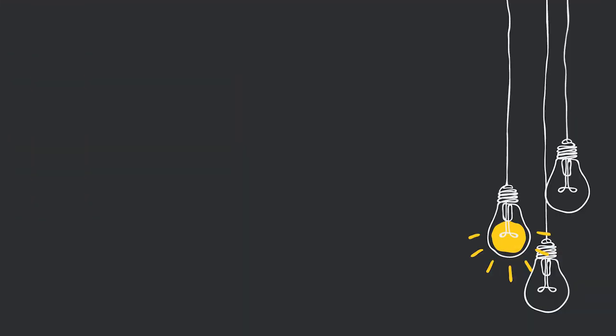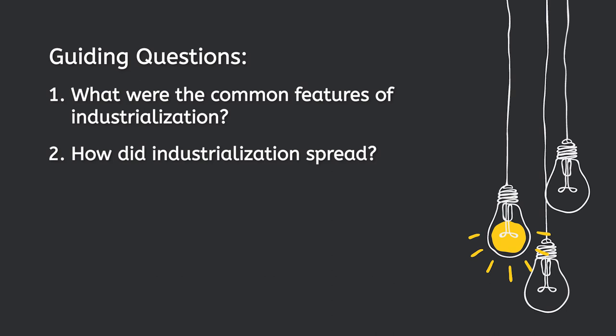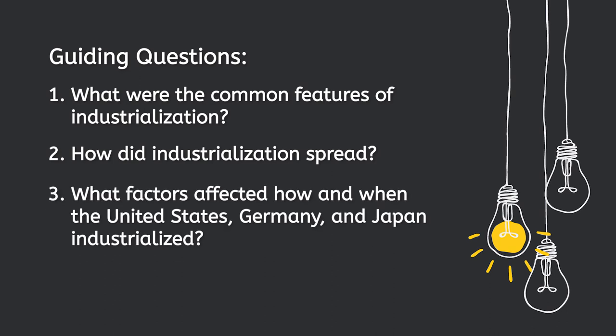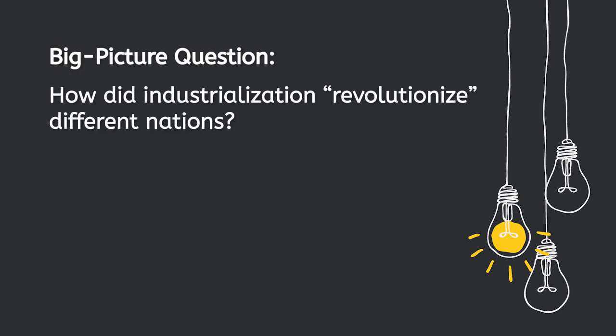But how did we get from steam engines to spaceships and virtual reality, and how did we do it over the course of just a few generations? Today we'll look at how industrialization progressed and spread over time to answer our three guiding questions: What were the common features of industrialization? How did industrialization spread? And what factors affected how and when the United States, Germany, and Japan industrialized? We'll also gather information and evidence to respond to the big picture question: how did industrialization revolutionize different nations?